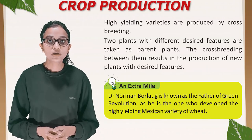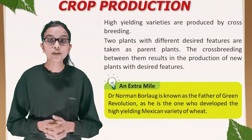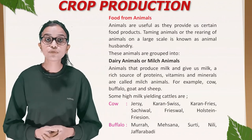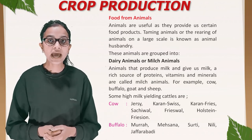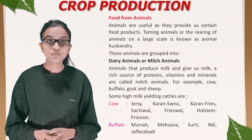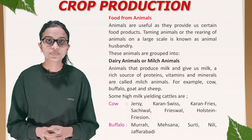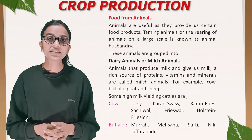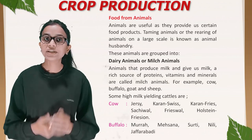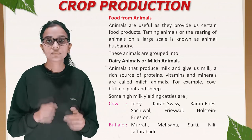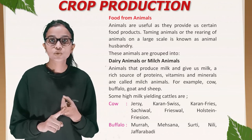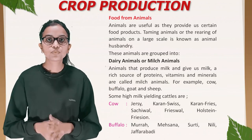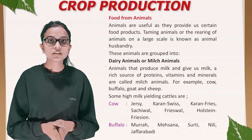An extra mile: Dr. Norman Borlaug is known as the father of the Green Revolution and developed the high-yielding Mexican variety of wheat. Food from animals: animals are useful as they provide certain food products. Taming animals or rearing them on a large scale is known as animal husbandry. Dairy animals that produce milk rich in protein, vitamins, and minerals include cow, buffalo, goat, and sheep. Some high milk-yielding cattle breeds include: cows — Jersey, Karan Swiss, Karan Fries, Sahiwal, Friesian; buffaloes — Murrah, Mehsana, Surti, Nili, Jaffarabadi.